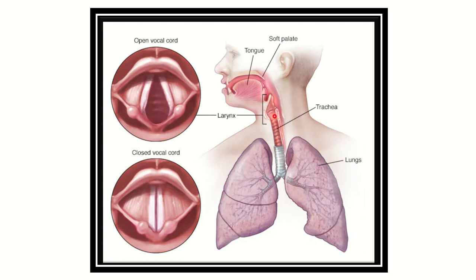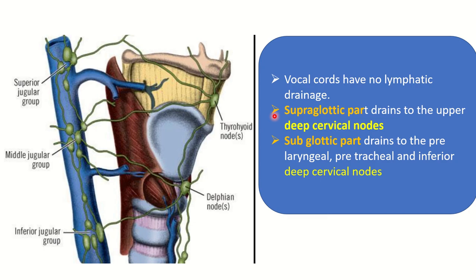Here we can see the lymph node groups in the larynx area — the thyrohyoid lymph node group in the upper part, then the jugular lymph node group draining upward. Importantly, we can see that the vocal cord has no lymphatic drainage.